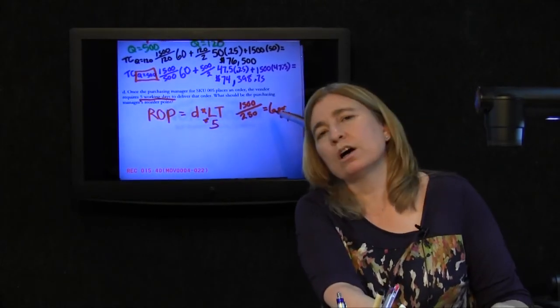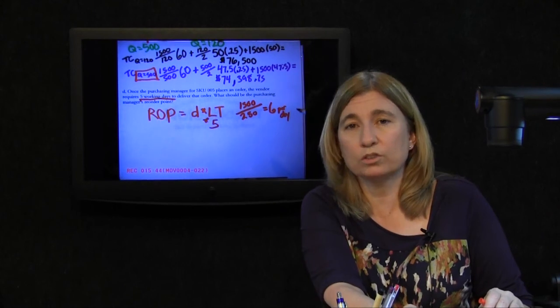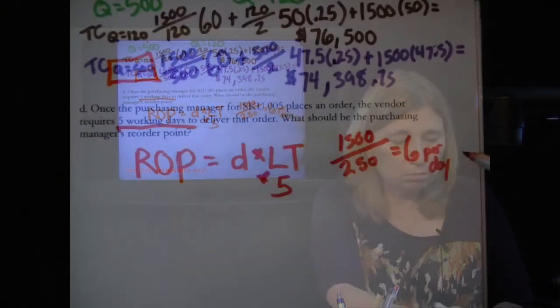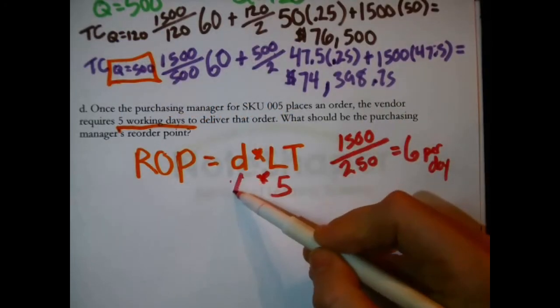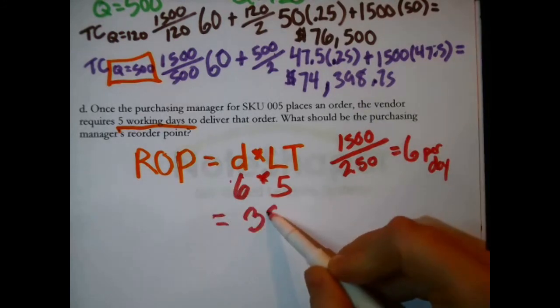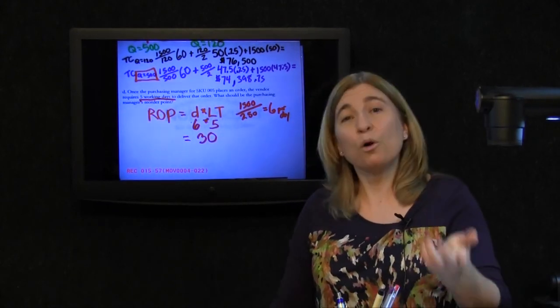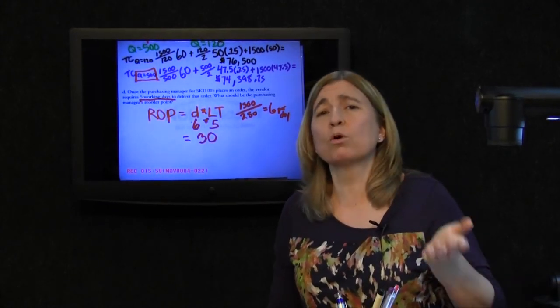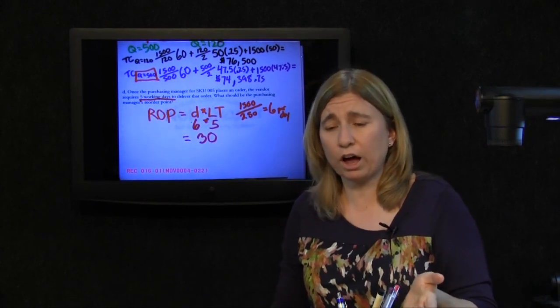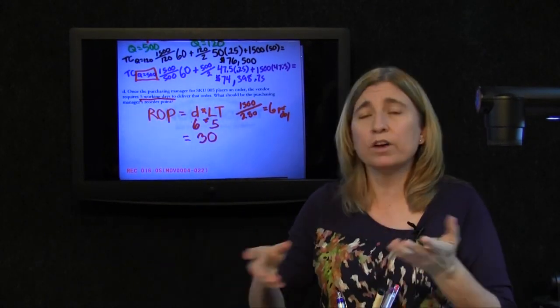You're basically using up, or the demand is six per working day. That goes right there. Five days worth of SKU-005 is 30. We use 30 over the course of five days. So we would want to reorder when there's 30 left in stock. So the reorder point for SKU-005 is 30.